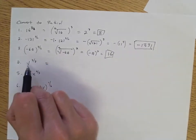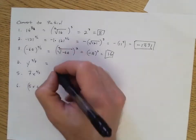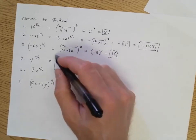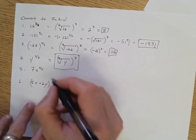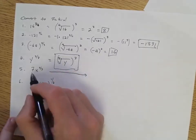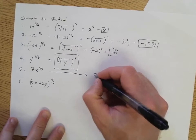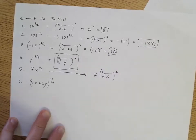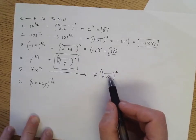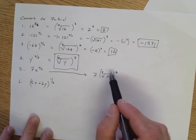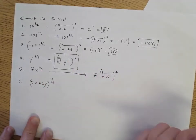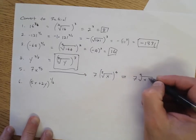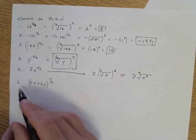Number four has variables so we can't simplify — we just rewrite it as the eighth root of y to the power of seven, and that's as far as we can take it. Number five: the main thing is to understand that the seven is separate from the x, so this is going to be seven times the fifth root of x to the power of four. You could alternatively write it as seven times the fifth root of x to the fourth.